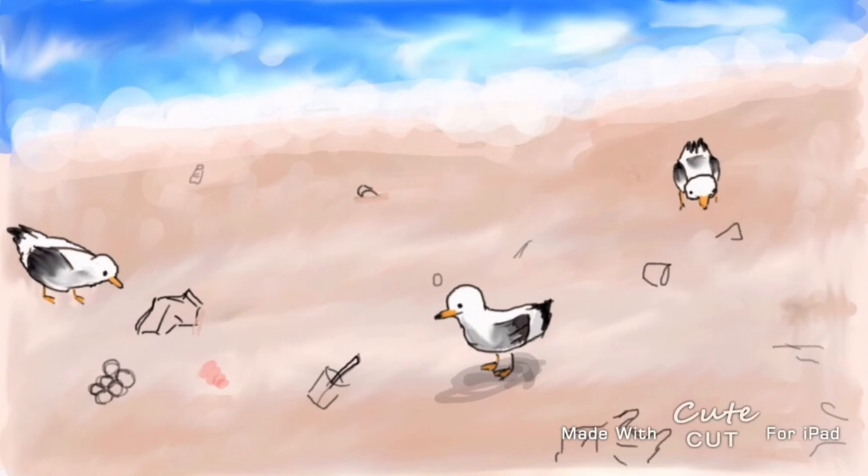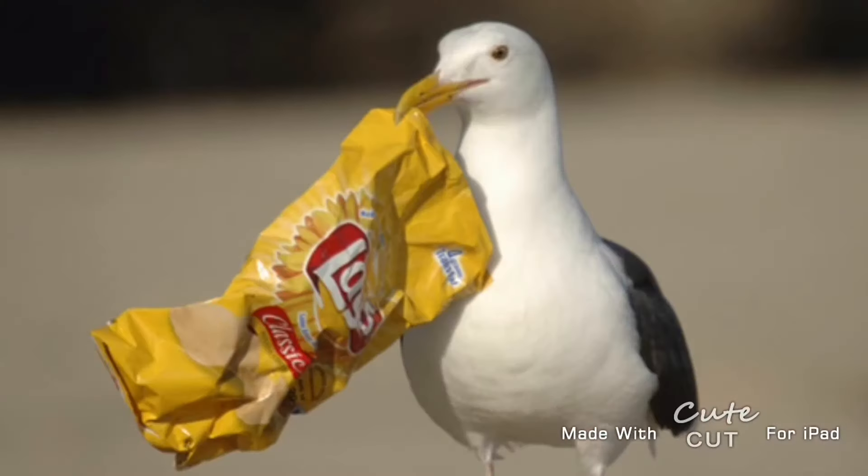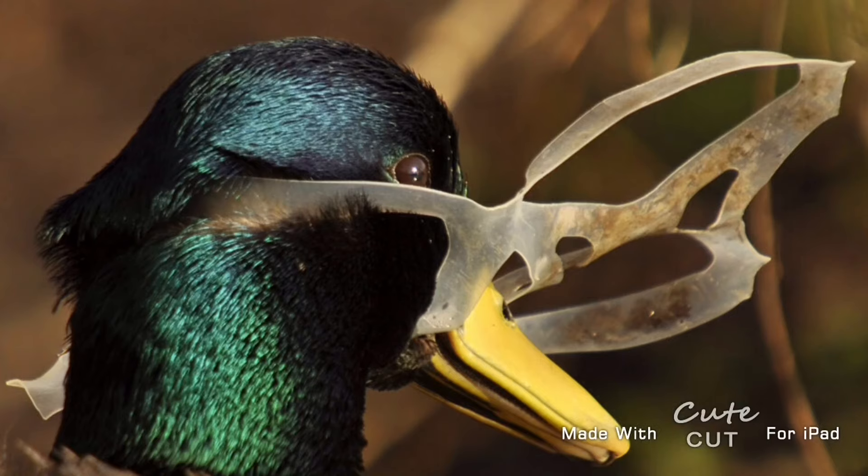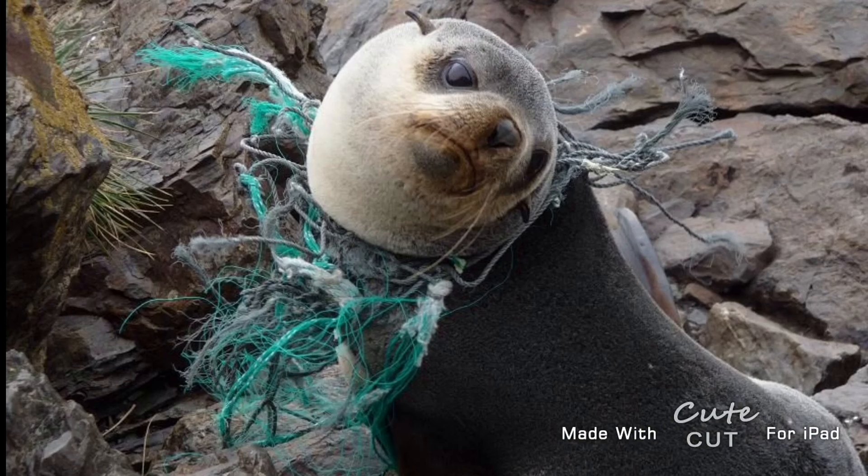Seagulls search for food on the beach. They see that plastic is food and they mistakenly eat it. When fish, turtles, ducks, and seals swim, they get caught in the plastic,